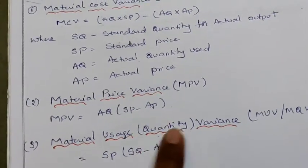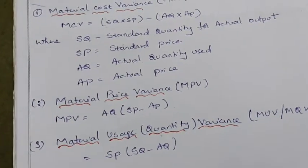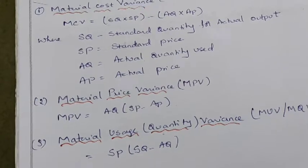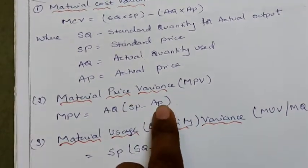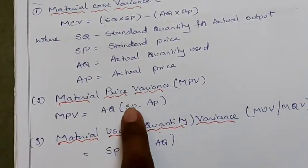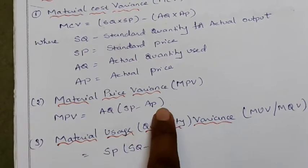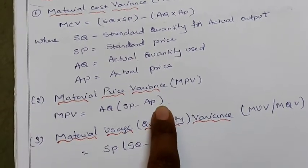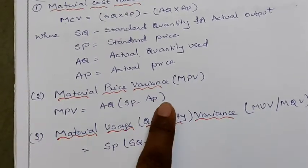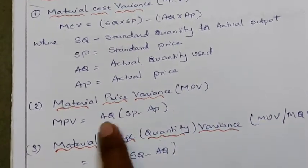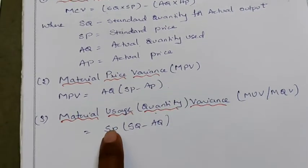Next, material price variance. For knowing the difference between the standard price and actual price, we apply this formula. Material Price Variance = AQ × (SP − AP). Note: first calculate (SP − AP), then multiply by AQ.